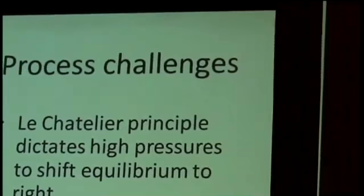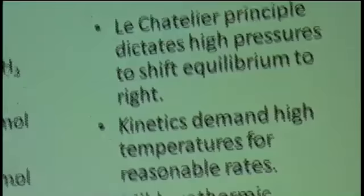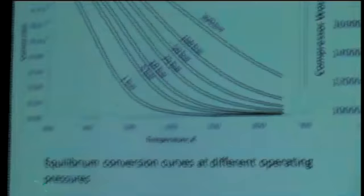If we could carry out this reaction at lower temperatures, we could overcome the thermodynamic barriers as indicated by the equilibrium conversions here as a function of pressure. As we increase the pressure, conversions increase. But that brings an energy penalty in terms of compressive work because the reaction is reversible and we have to separate the unconverted reactants. If you could carry out this reaction at lower temperatures you could achieve very high single pass conversion.